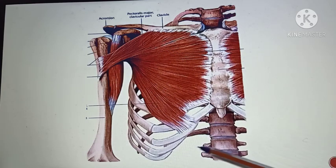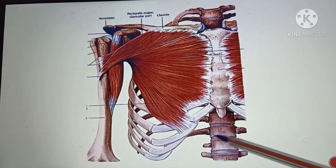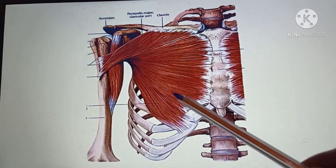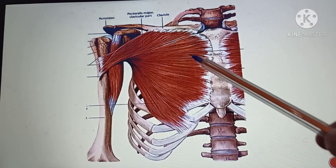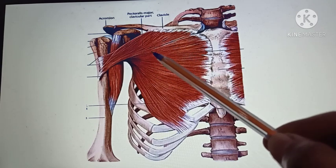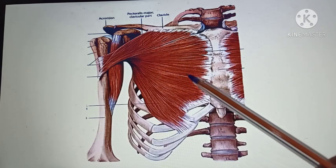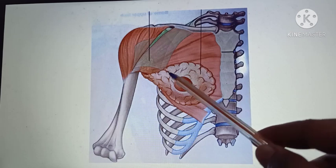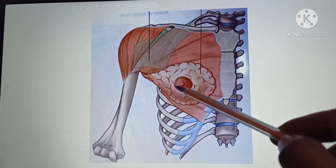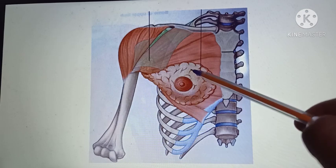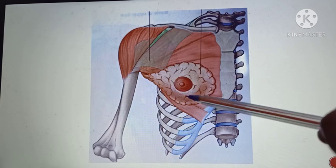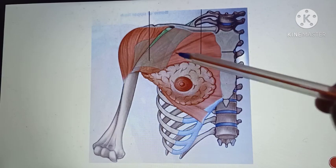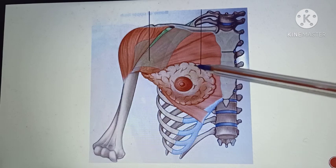In this slide, what you can see is the thorax, and over here is the pectoralis major muscle — a large fan-shaped muscle that covers most of the upper part of the thorax. The mammary gland is lying superficial to the pectoralis major muscle, so the pectoralis major muscle is forming the bed for the mammary gland.